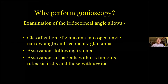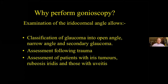But first, why do we need to look at the iridocorneal angle? I've listed some reasons here. The commonest is to determine whether or not the patient has a narrow angle, but there are other reasons. Trauma can cause angle damage that may make the IOP go up — angle recession — or down, as in a cyclodialysis cleft. The angle may also show abnormalities in other eye diseases, some listed here.